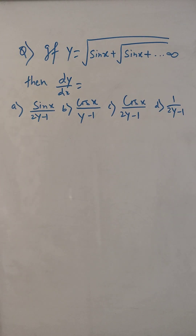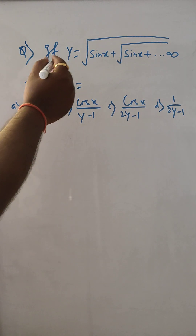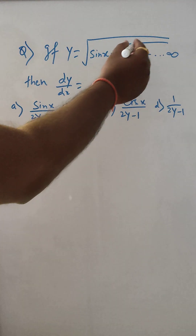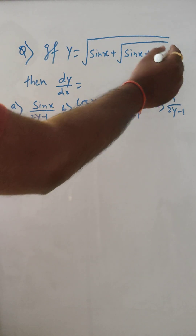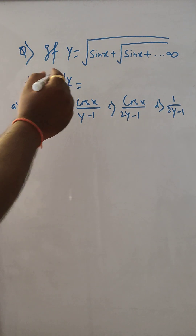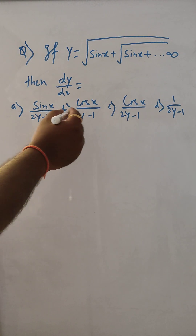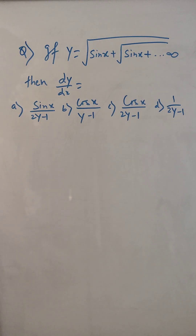Hello, so this is another problem of differentiation. Here, if y is equal to under root sin x plus under root sin x, going like this to infinity, then we have to find dy by dx. The options are given as a, b, c, d, so let us see which option is correct.